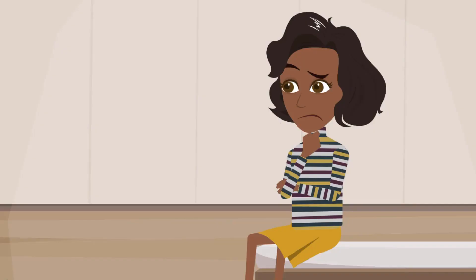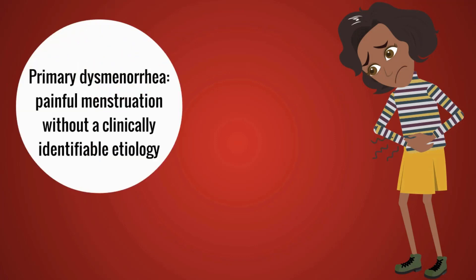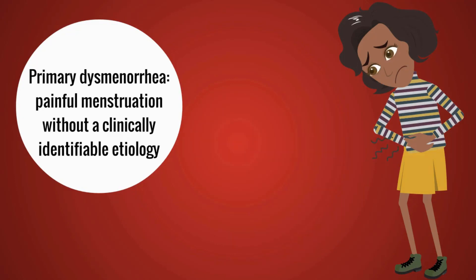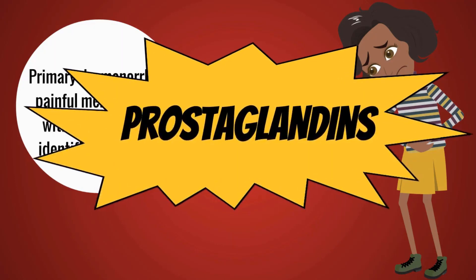Now that we've reviewed the tissues, let's answer our patient's question: what is going on to cause the pain? Primary dysmenorrhea is painful menstruation without a clinically identifiable etiology, while secondary dysmenorrhea is painful menstruation caused by an identifiable underlying condition such as endometriosis. Primary dysmenorrhea is mediated by prostaglandins.